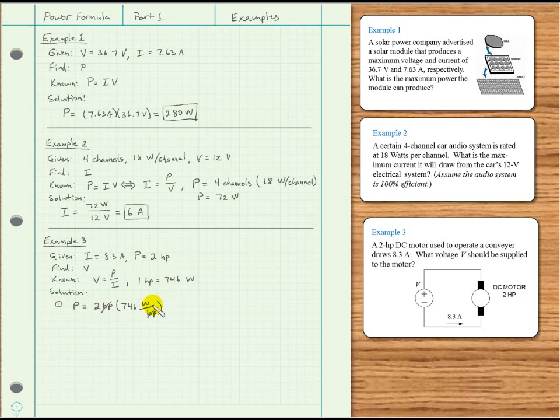So P equals 2 horsepower times 746 watts per horsepower. The horsepower units cancel, leaving us with just watts, which is what we want, and then 2 times 746 is 1492 watts.